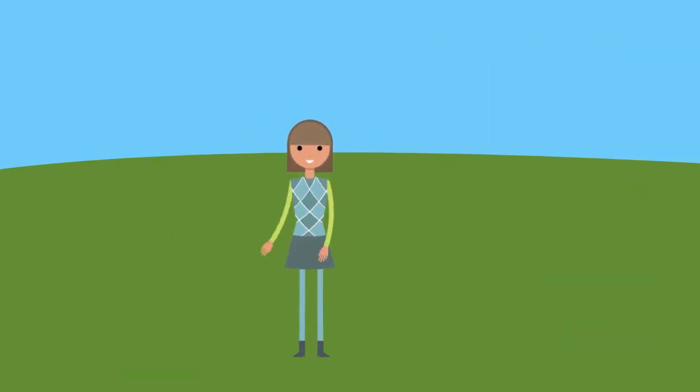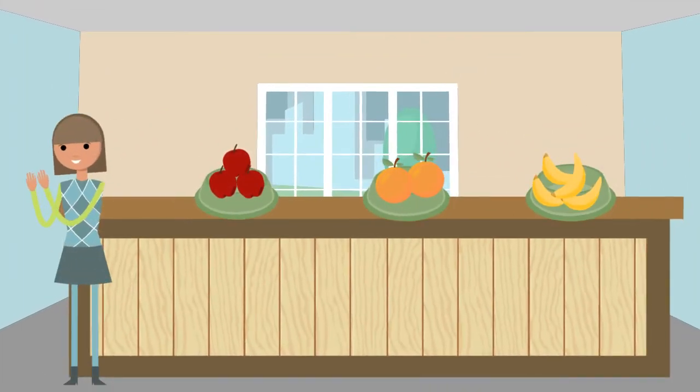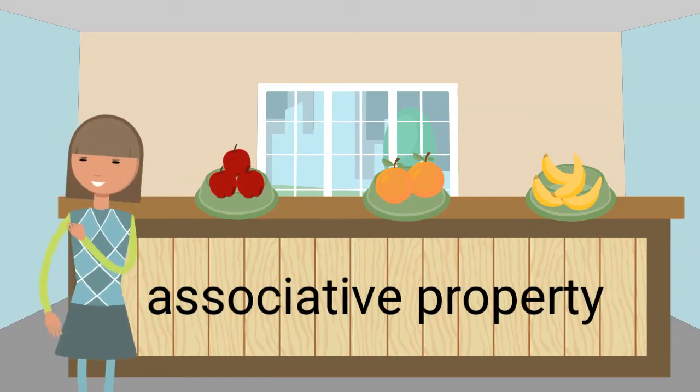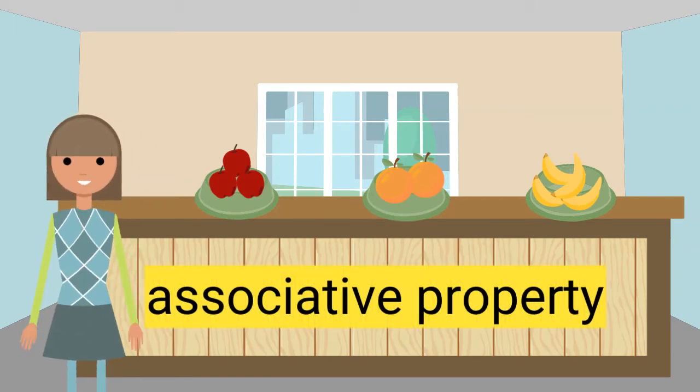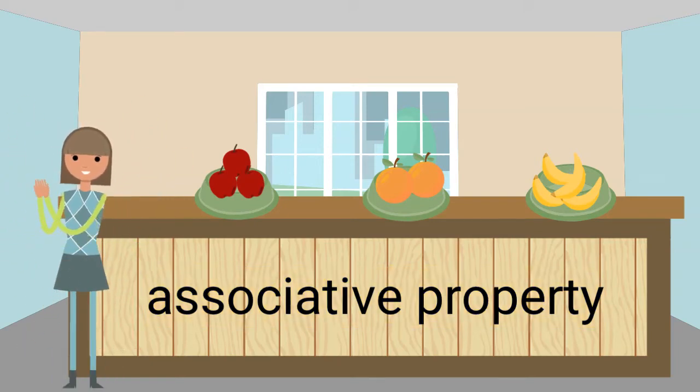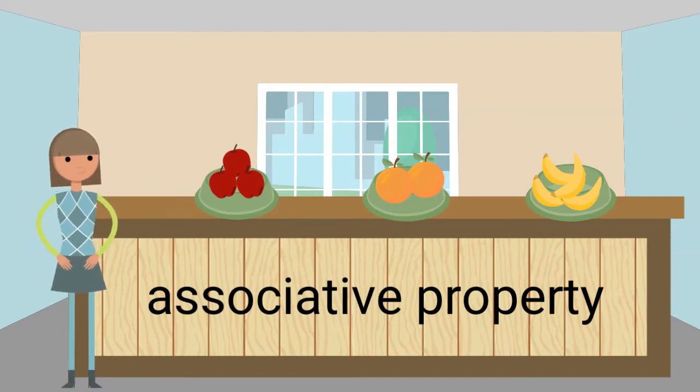Let's head to the kitchen to learn about the associative property. Another property we can use when adding is the associative property. Can you say associative property? Bravo! The associative property is a rule that allows us to change the groupings of numbers we are adding, but still get the same sum.